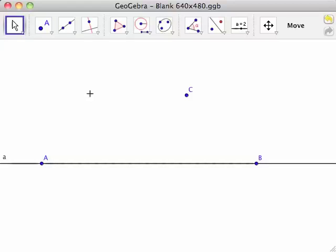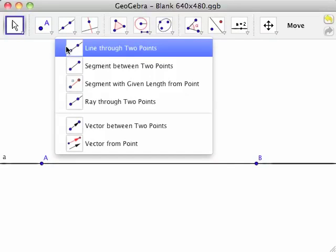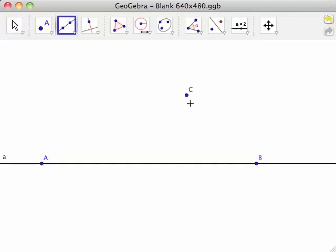Select the Line Through Two Points tool from the line toolbar. Click first on point C, then click anywhere on line AB. This will create point D and line CD, labeled as lowercase b.